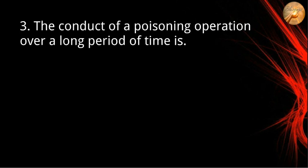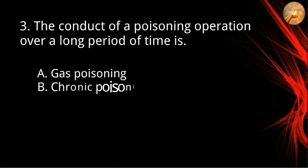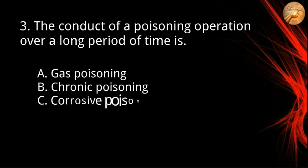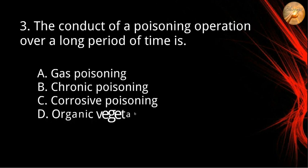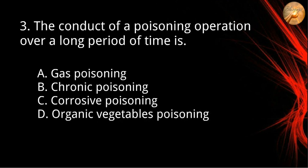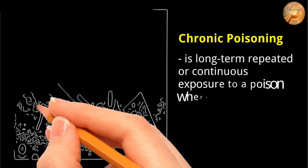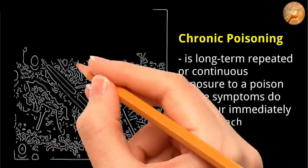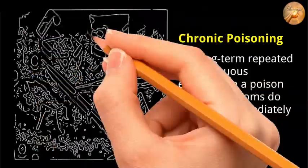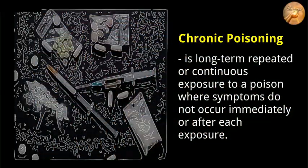Number three: the conduct of a poisoning operation over a long period of time. A) gas poisoning, B) chronic poisoning, C) corrosive poisoning, D) organic vegetable poisoning. The correct answer is letter B, chronic poisoning. Chronic poisoning is a long-term, repeated, or continuous exposure to a poison where symptoms do not occur immediately or after each exposure.